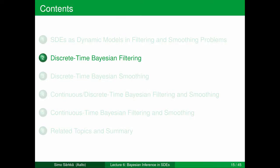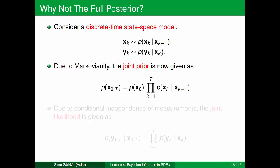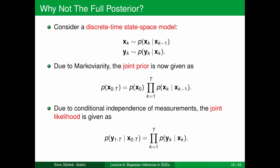Let's now go to the basics of discrete time Bayesian filtering. As we saw already in the last part of the lecture, the continuous-discrete state estimation problem where we have an SDE model following the dynamics and then measurements are obtained at discrete time instances can be reformulated as a discrete time state space model. Here xk denotes x at time tk and the measurements are obtained at times tk. Due to Markovianity, the joint prior distribution of x's from 0 to t equals the prior distribution of x0 times the product of the transition densities p(xk | xk-1). Due to conditional independence of measurements, the joint likelihood is given as the product of p(yk | xk) over k.